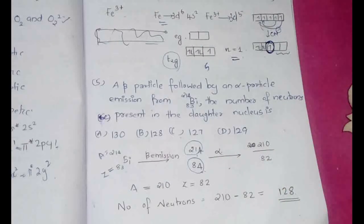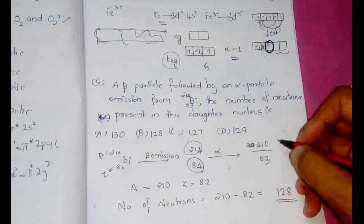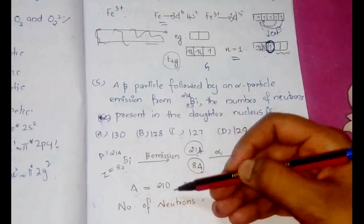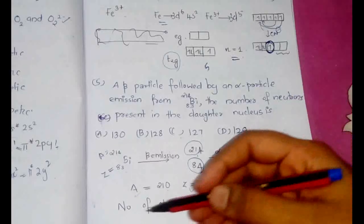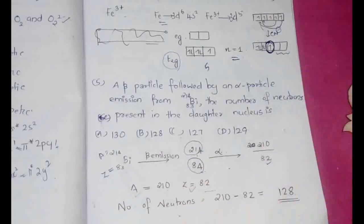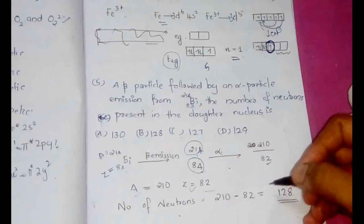Now what happens when an alpha particle emission occurs. In an alpha particle emission the mass number would be decreased by 4 and the atomic number would decrease by 2. So now it becomes 210 and 82. So as a result, the mass number is equal to 210 and the atomic number is equal to 82. Now what we have to do, the number of neutrons will be mass number minus atomic number, so 210 minus 82, it is 128. So our answer would be option B: 128.